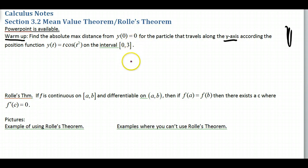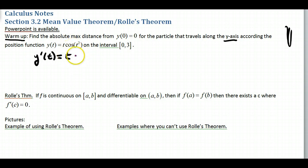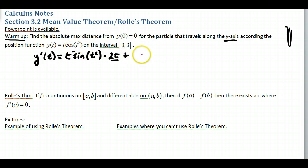So how do we do this? We need to find how far away we are from (0, 0) — that's distance. And distance from (0, 0) requires the derivative to tell us when we have our turning points. So y'(t): first times the derivative of the second — the derivative of cosine is negative sine, leave the inside alone, then apply the chain rule. That's the first times the derivative of the second, plus the second times the derivative of the first, which is cosine(t²) times 1. So that's the derivative.